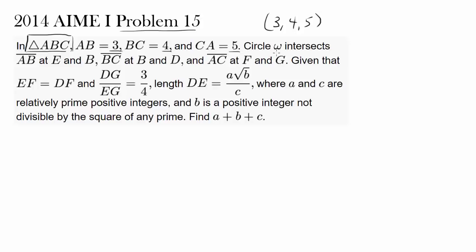Circle Omega intersects AB at E and B, BC at B and D, and AC at F and G. And we have EF equal to DF. That's a lot of information that's very hard to visualize unless we draw a picture, so let's do so.